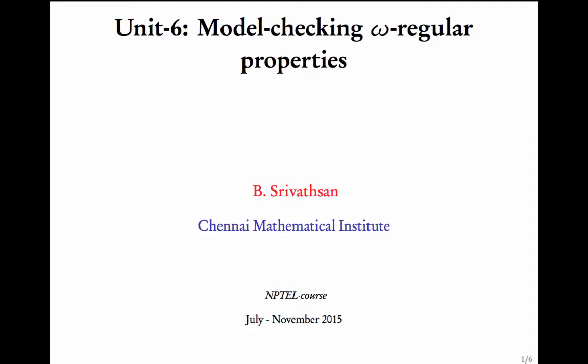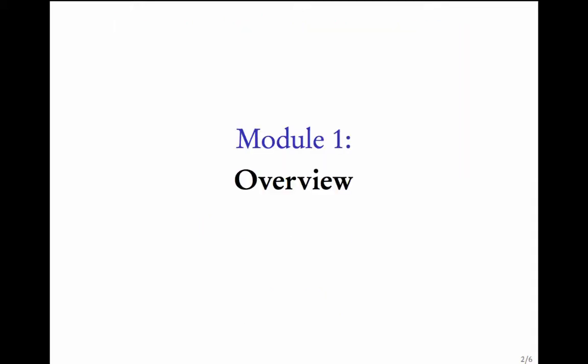Welcome to unit 6 of this course. In the last unit we saw what are called omega-regular properties. In this unit we would concentrate on checking these omega-regular properties on transition systems. We will see algorithms that take as input a transition system and an omega-regular property, and output whether the property is true on this transition system or not. In the first module I will give an overview of what we are going to see in this unit.